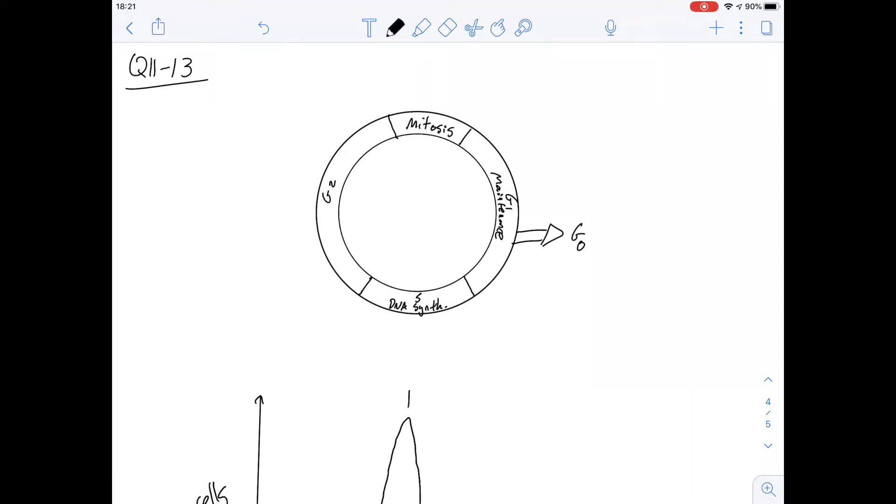Hi I'm Karl and in this video we're going to have a look at questions 11 to 13 of section 3 of the pink booklet. This is a question about cell division and the amount of DNA that's present in a cell when it's dividing.